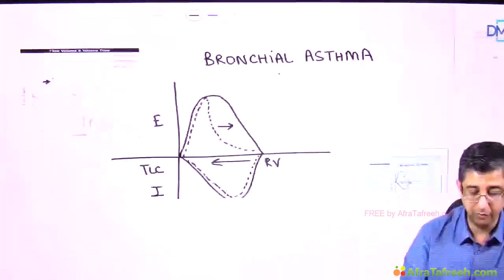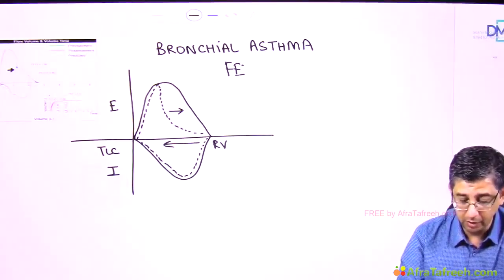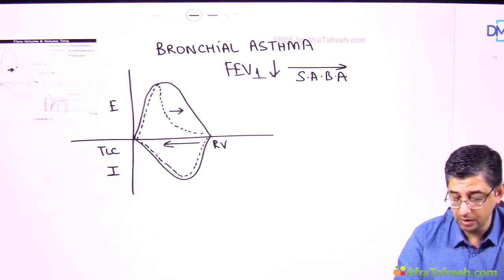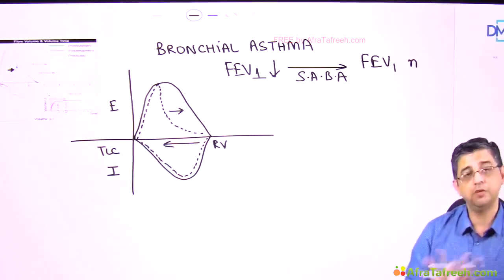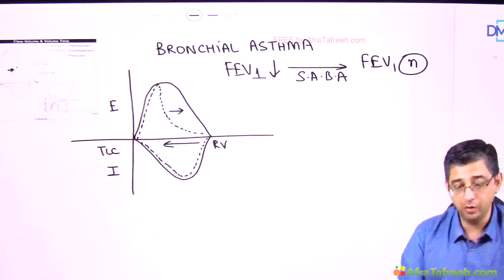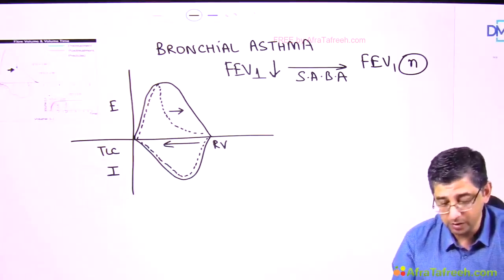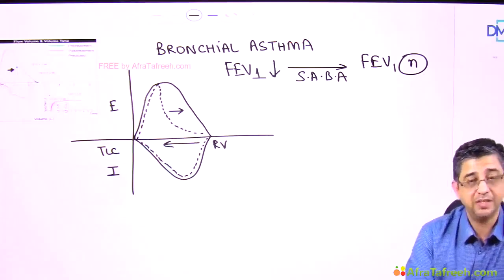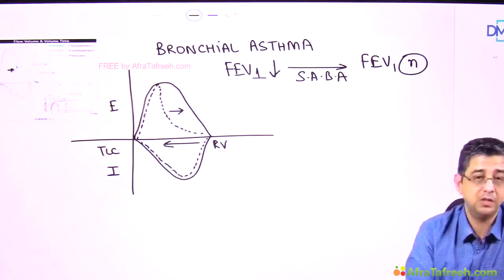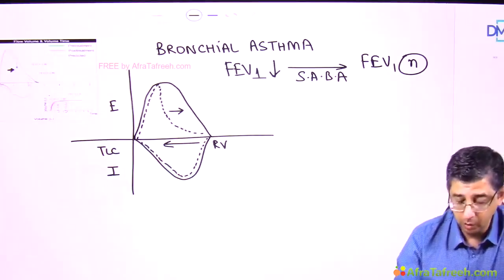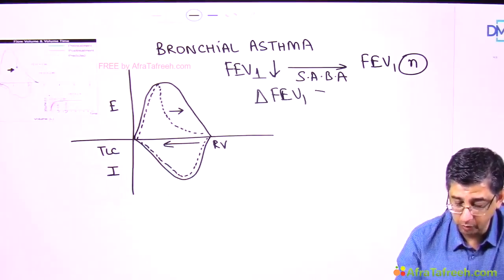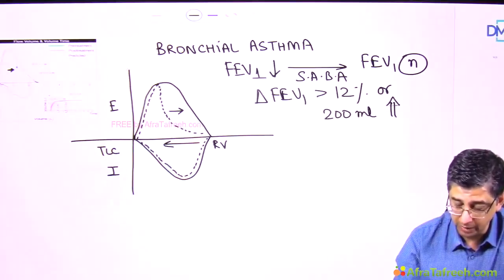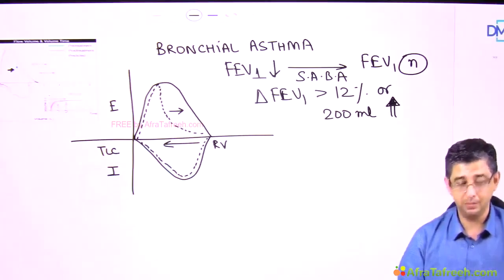Asthma is a reversible airway disorder. Reversibility can be demonstrated by giving a short-acting beta-2 agonist. In the exam, you may be asked what change in FEV1 before and after giving salbutamol confirms bronchial asthma. Note that normalization of FEV1 in asthma is definitely a possibility, because asthma involves exacerbations and patients not in an exacerbation can have a normal or near-normal FEV1. The change in FEV1 before and after salbutamol should be at least 12%, or in mathematical values, a 200 ml increment over the baseline FEV1, to confirm bronchial asthma.